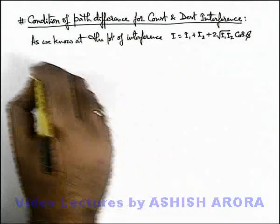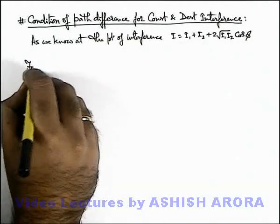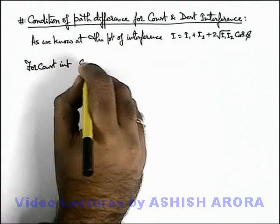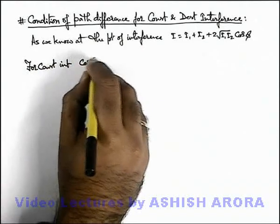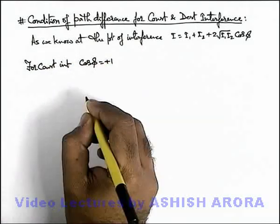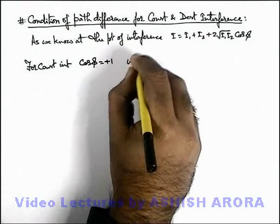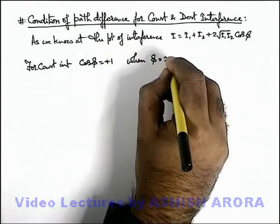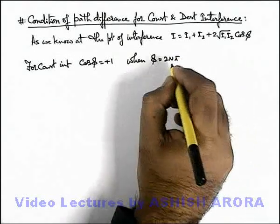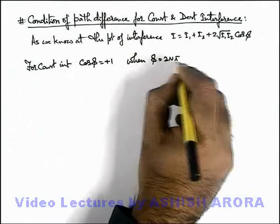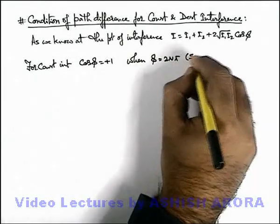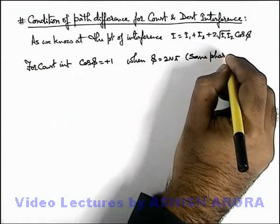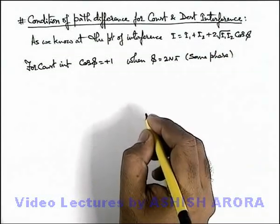In this situation, for constructive interference the value of cos φ is equal to plus 1, which happens when the phase difference between the 2 waves is 2nπ — that is, a multiple of 2π — or when the waves are in the same phase, they interfere in a constructive manner.